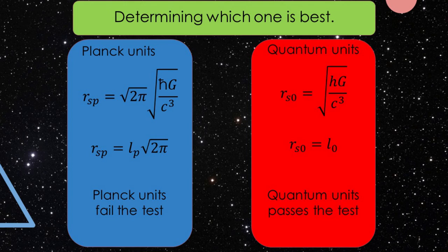This results in the smallest Schwarzschild radius for the Planck units being Planck length times the square root of 2π. For the quantum units, the smallest Schwarzschild radius equals the quantum length. As a result, the Planck units failed the test, but the quantum units passed. Both sets of units produce the same minimum Schwarzschild radius; however, that radius is equal to the quantum length.